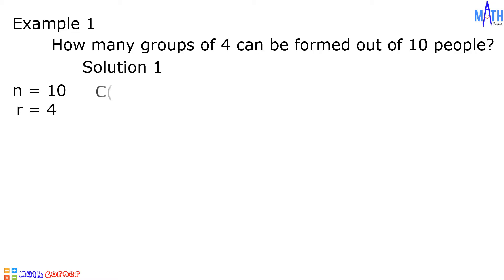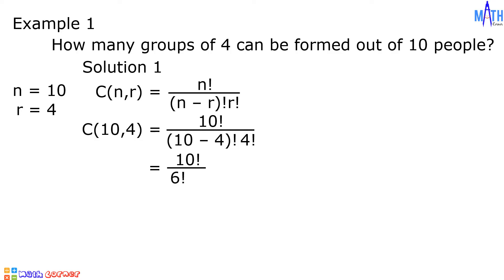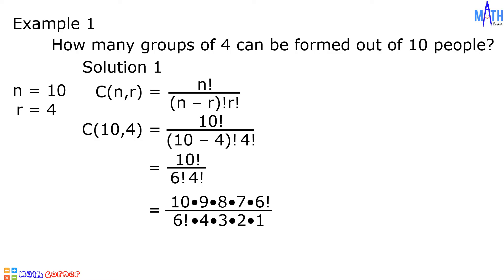Using this formula, the combination of 10 taken 4 at a time is equal to 10 factorial over the quantity 10 minus 4 factorial times 4 factorial. This gives us 10 times 9 times 8 times 7 times 6 factorial, all over 6 factorial times 4 times 3 times 2 times 1. Cancel out common factors — cancel out 6 factorial.